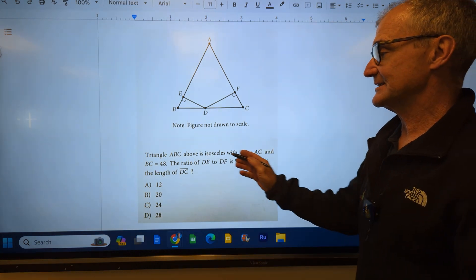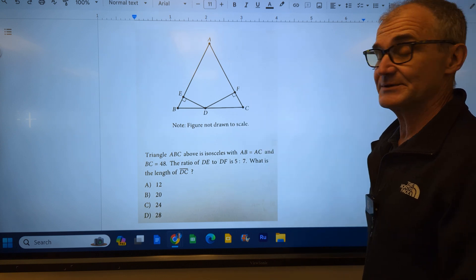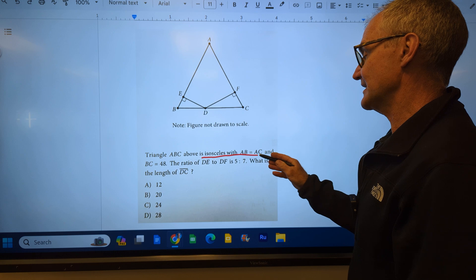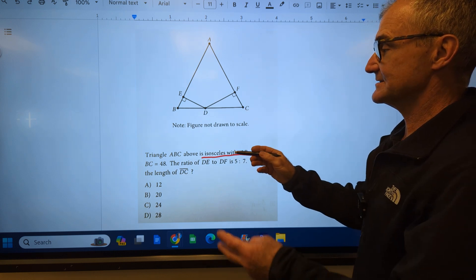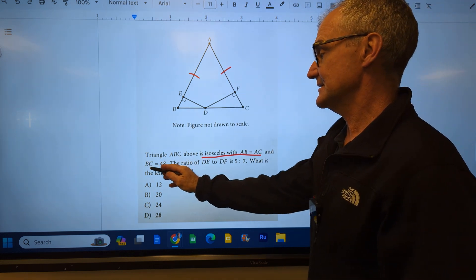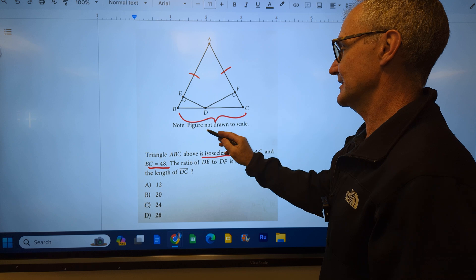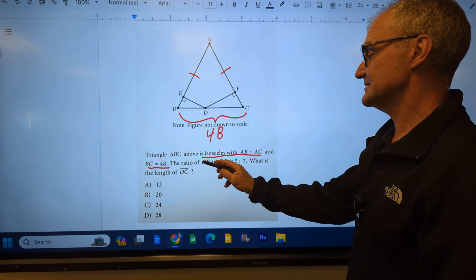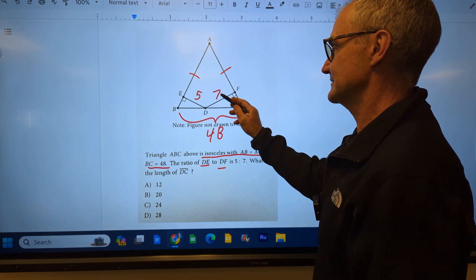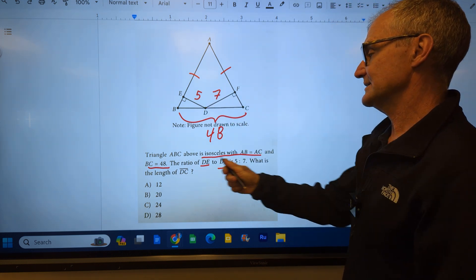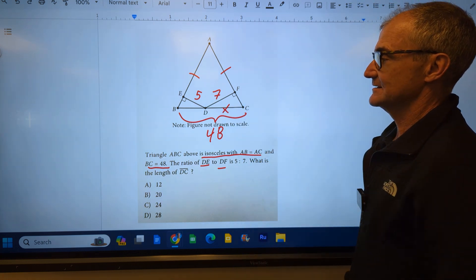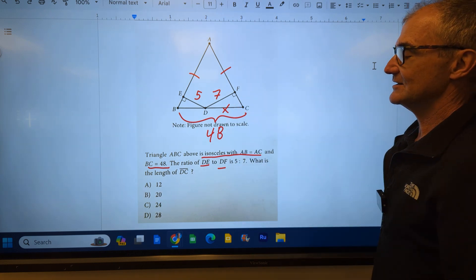Step one in solving this problem is I take all of this information and I transfer it to my picture. Triangle ABC above is isosceles with AB equal to AC. Isosceles means two equal sides. AB is congruent to AC. BC is 48, so this length right here is 48. The ratio of DE to DF is 5 to 7. What is the length of DC? So what I'm asked to look for I label as an X. So there's a lot of information here. Now that it's all in my diagram,